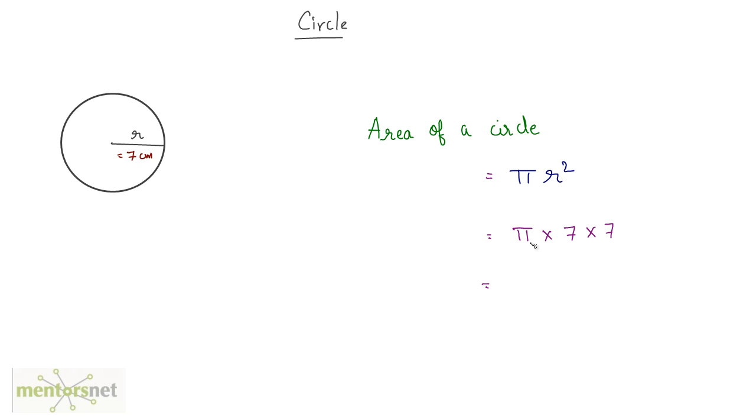Now what is the value of pi? You can take the value of pi, pi is a universal constant as 3.14 or you can take the value of pi as 22 by 7 and that's standardized.